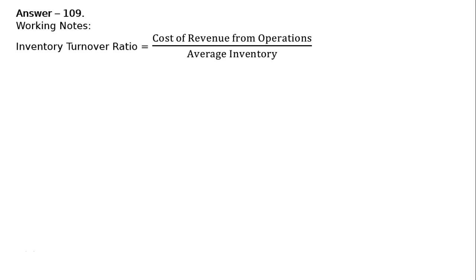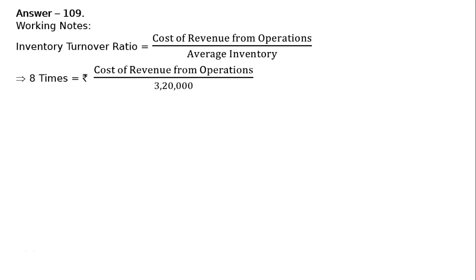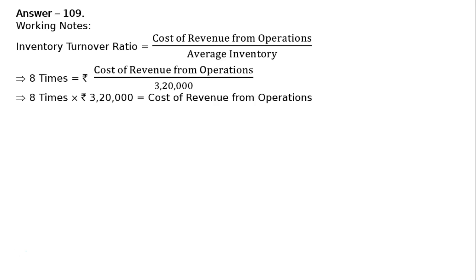Answer 109. Working notes: Inventory turnover ratio is equal to cost of revenue from operations upon average inventory. It is 8 times, equal to cost of revenue from operations upon average inventory. We have been given average inventory and inventory turnover ratio, so cost of revenue from operations equals rupees 3,20,000 multiplied by 8, which is rupees 25,60,000.